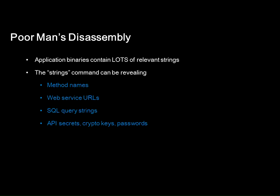Once you have the unencrypted binary, there's quite a bit you can do. Anyone who does incident response knows: when you get a random malware binary, you run strings on it. It tells you a lot without even putting it into IDA. It's the same with an iOS application — running strings gives you method names being used, web service URLs, specific web service calls, parameter names, SQL query strings, and also what a binary needs to actually work: API keys, crypto keys, passwords to the backend, all sorts of interesting secrets. If you know where to look, it's all right there.